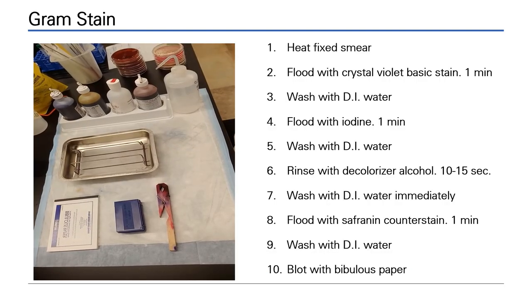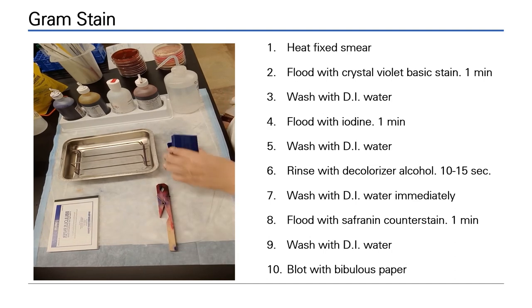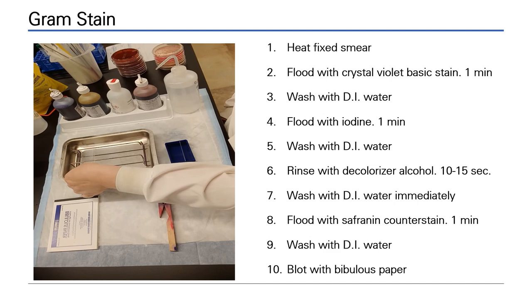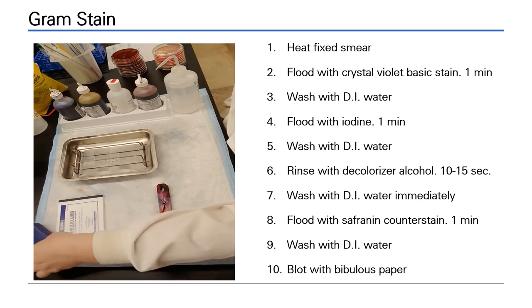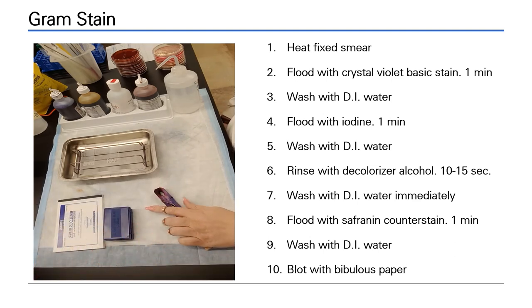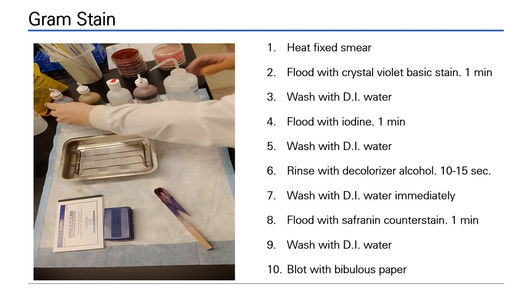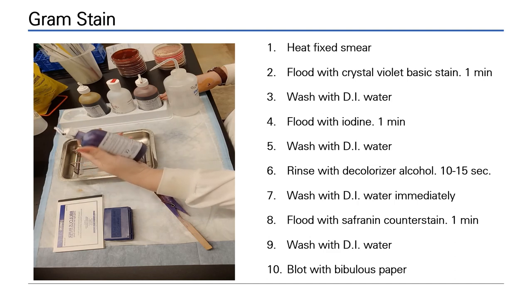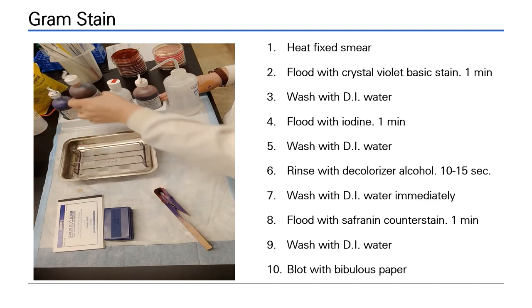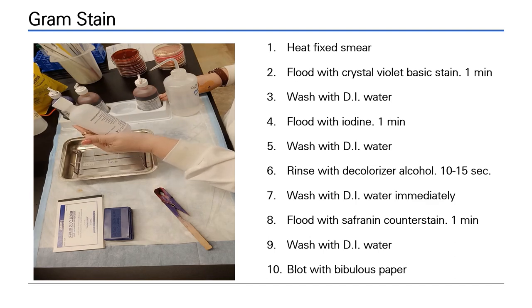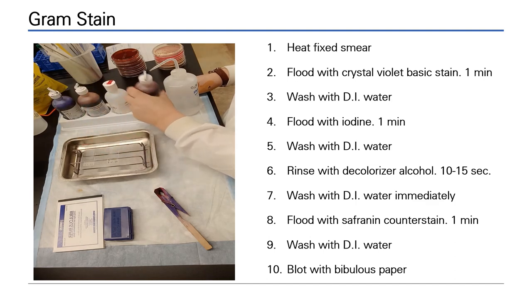The gram stain is a differential staining technique which categorizes organisms on the basis of their cell wall structure. To perform a gram stain, you will need heat-fixed smears of your specimens. Place them on a staining rack if you do not have a staining sink. Make sure all of your reagents are accessible. Once you start staining, you will continue through each step. Your reagents include crystal violet basic stain, iodine the mordant, alcohol the decolorizer, and safranin the counterstain. Start by opening all of your stain bottles.